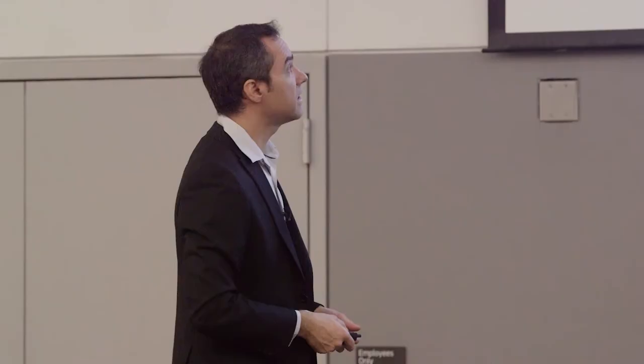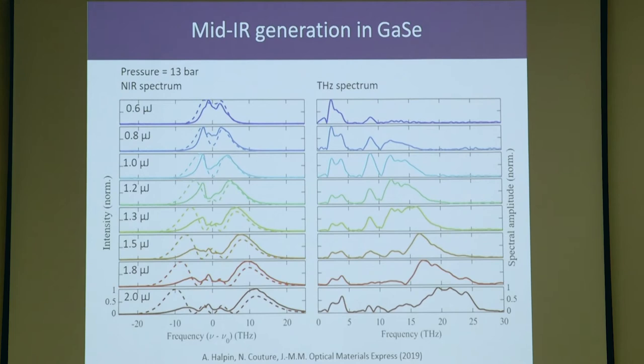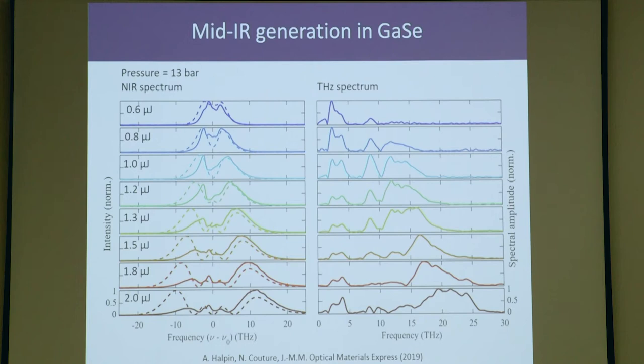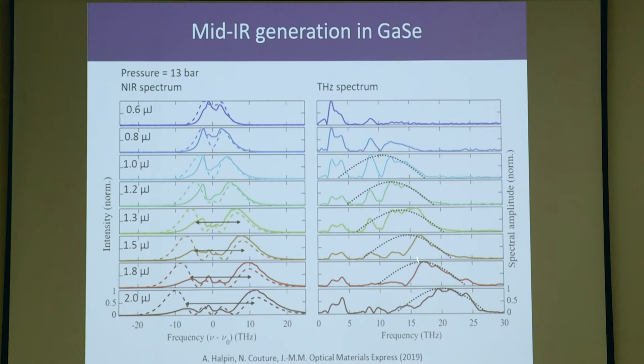Something else we noticed during the experiment is self-phase modulation, which is the nonlinear mechanism responsible for broadening, naturally redistributes the spectral weight into two lobes. As you can see here, most of the energy is inside these two lobes. This is perfect for us because we're relying on a three-wave mixing process, so difference frequency mixing between this part and this part to give rise to the terahertz. It turns out this is a natural way of enhancing the efficiency for terahertz generation. If you look at the spacing between these lobes, and I put the maximum of this envelope over the terahertz, it fits really well. This indicates we are enhancing the generation mechanism.